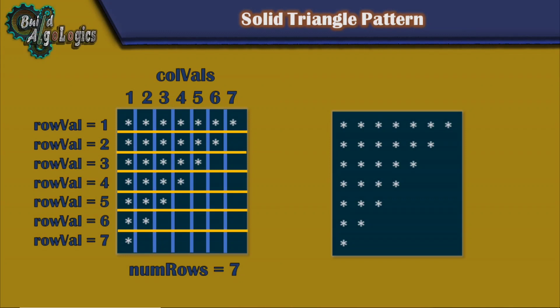This means each time the value of column is decrementing by 1 for each value of row. For the first row, the inner loop is running 7 times, and this value is similar to our num_rows. So we can use the value of num_rows as our initial value for printing these stars. Let's see this through the code.